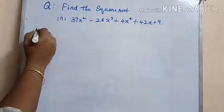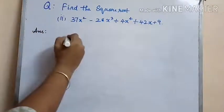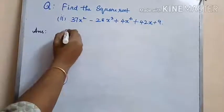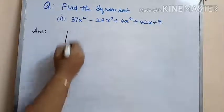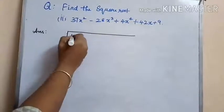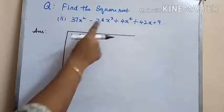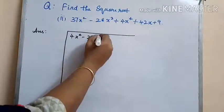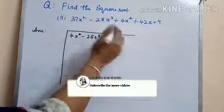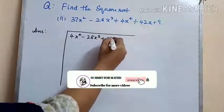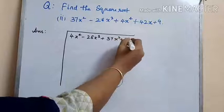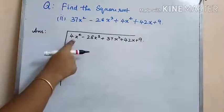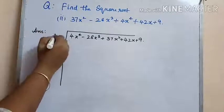The second polynomial is 4x to the power of 4 minus 28x cubed plus 37x squared plus 42x plus 9. First we have to rearrange it in the proper order: 4x⁴ minus 28x³ plus 37x² plus 42x plus 9.